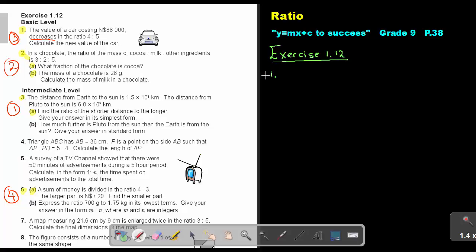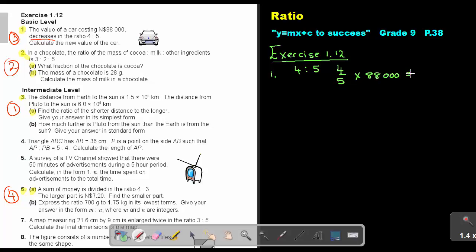Let's start with number one. Now, if I look at number one, they say decrease in the ratio of 4 to 5. Can you remember decrease? Let's first write down the ratio. It's 4 to 5. But then I take the smaller one over the larger one, because it's decrease, and I multiply it with the 88,000. And if I multiply that, I will get 70,400. So, I can end with a sentence saying, the new value of the car will be 70,400.